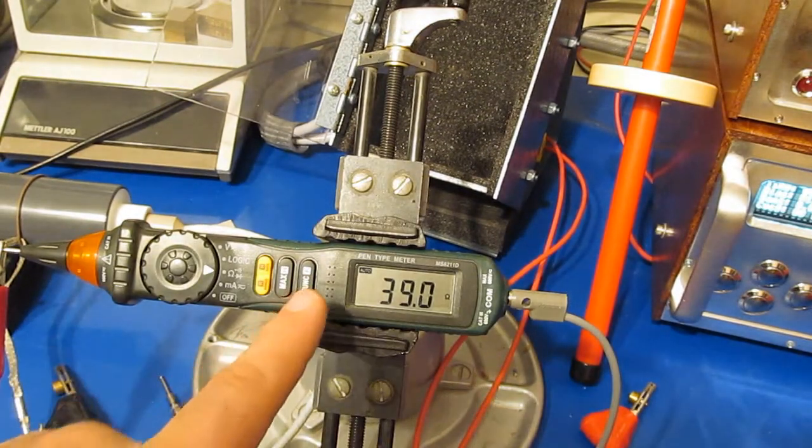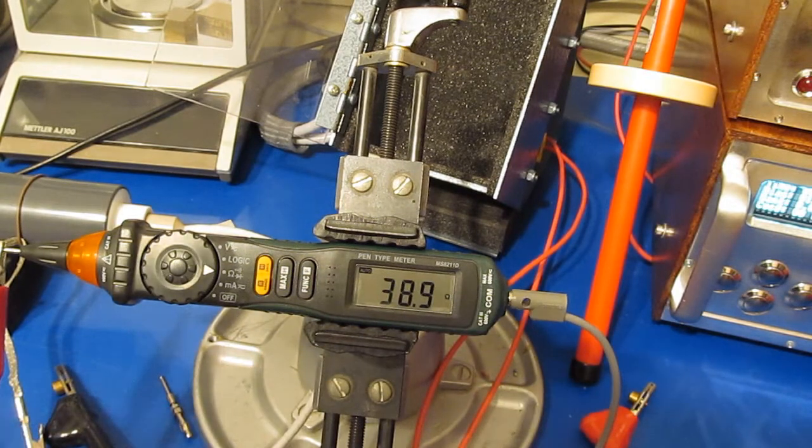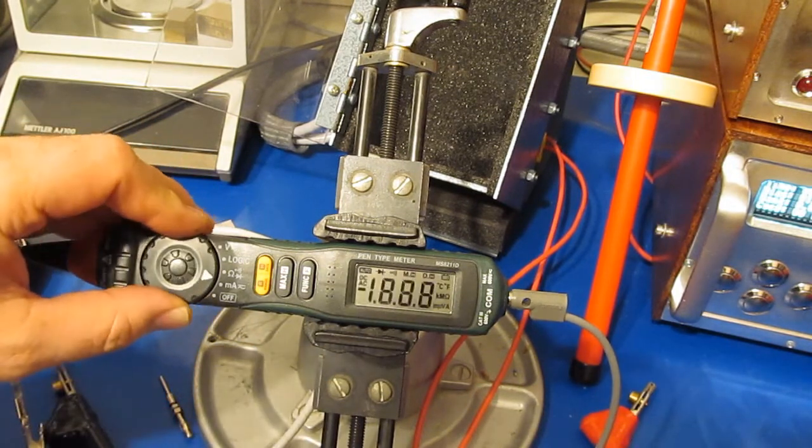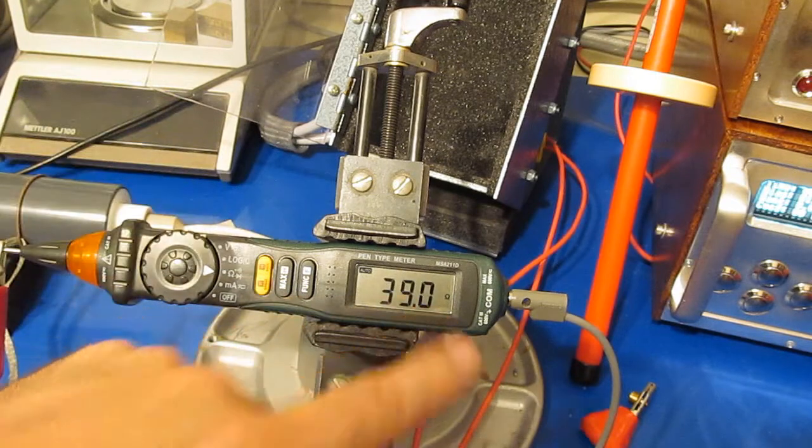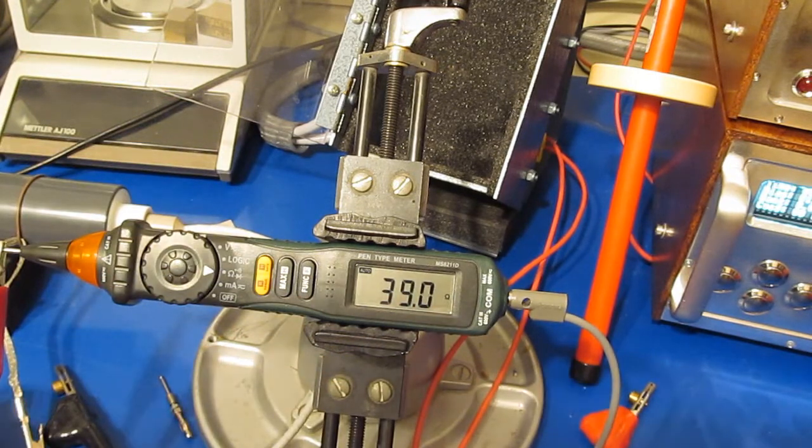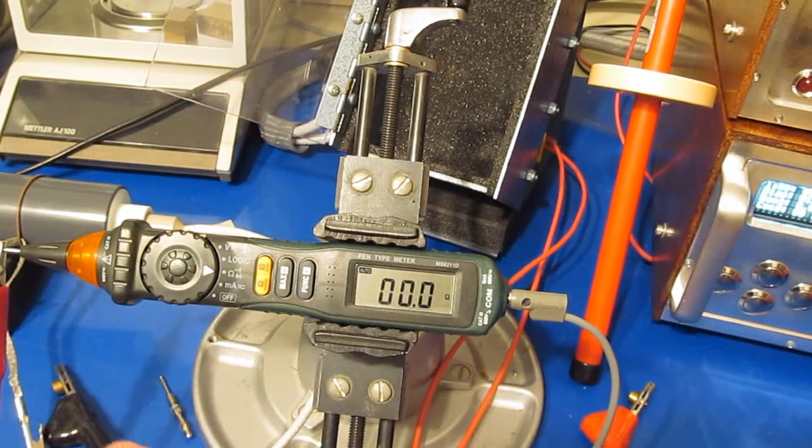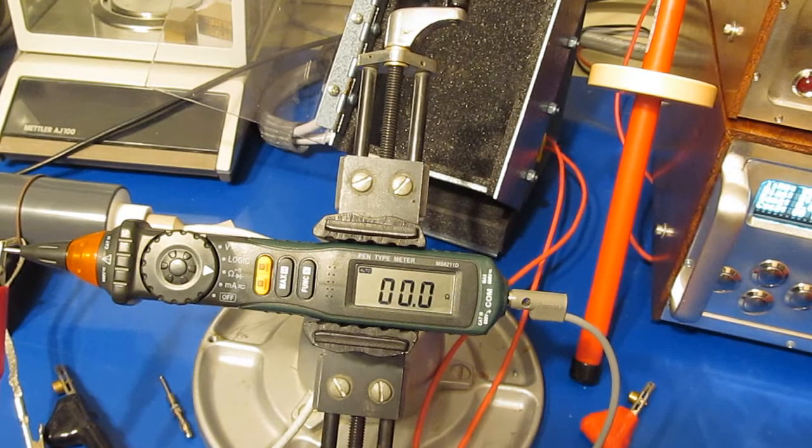Unfortunately it looks like we actually damaged the meter this time. You can see I've got it in resistance mode. And it's reading roughly 39 ohms. This is with an open. You can see we short it out. It reads zero ohms.